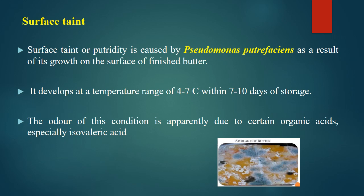Surface taint or putridity is caused by Pseudomonas putrefaciens as a result of its growth on the surface of finished butter. It develops at a temperature range of 4 to 7 degrees Celsius within 7 to 10 days of storage. Pseudomonas can grow at refrigeration temperature and cause taint on the surface. The odor of this condition is apparently due to certain organic acids, especially isovaleric acid, which is the compound formed with the growth of this organism.